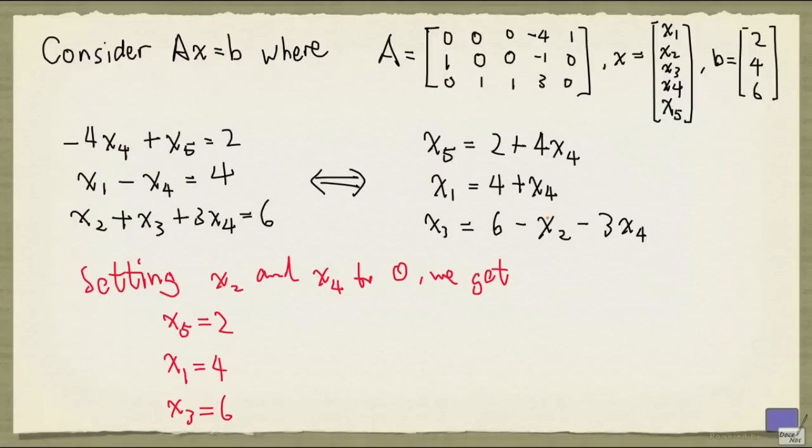Our non-basic variables are x2 and x4, and our basic variables are x5, x1, x3. Now, the question of whether or not you can always turn a system of linear equations into this form is worth considering. And this is something that we'll address later.